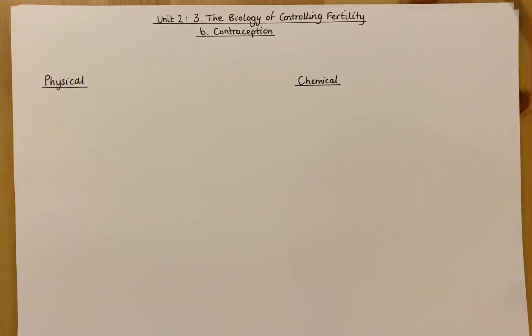This video covers the Unit 2 Reproductive Biology section. It covers biology, control, infertility and specifically contraception. You need to understand what fertility and infertility are from the previous video, but mainly this will focus on people who are fertile and would therefore need contraception if they decided they did not want to become pregnant.